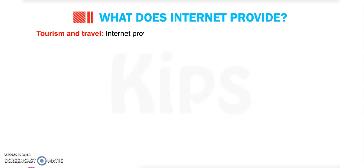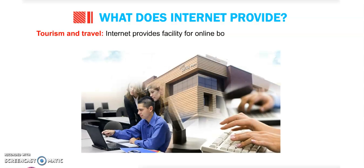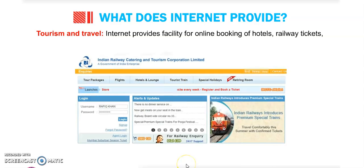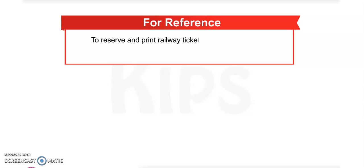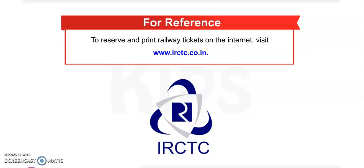Tourism and travel: the internet provides facilities for online booking of hotels, railway tickets, air tickets, etc., all over the world and around the clock. For reference, to reserve and print railway tickets on the internet, you can visit the site www.irctc.co.in. This is the logo of IRCTC.